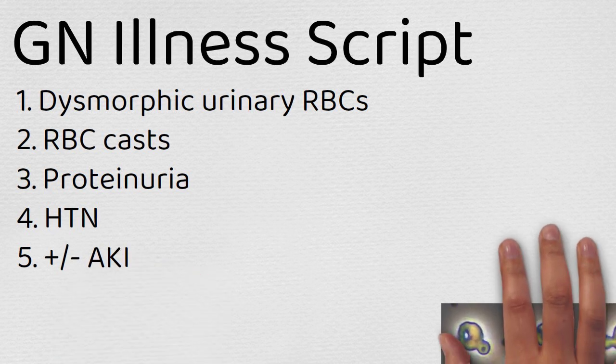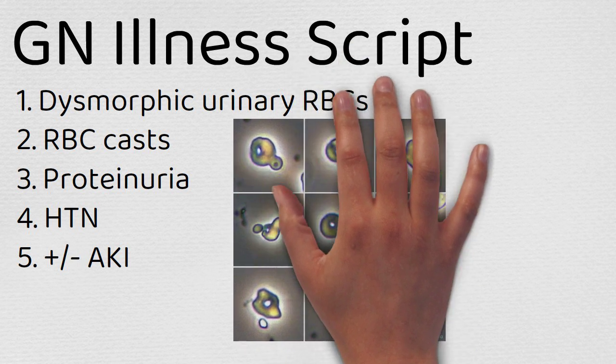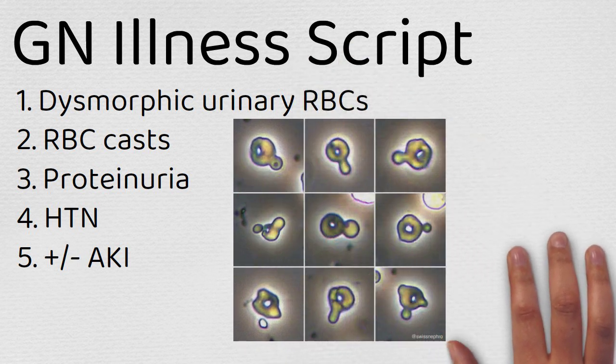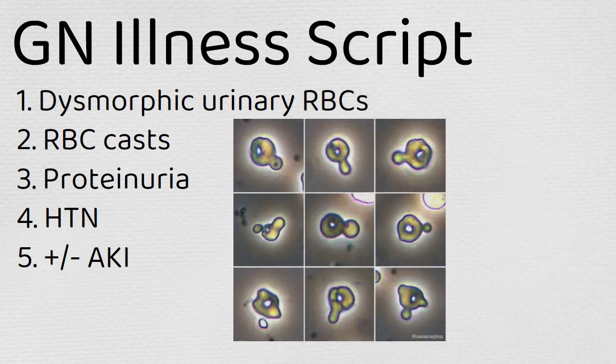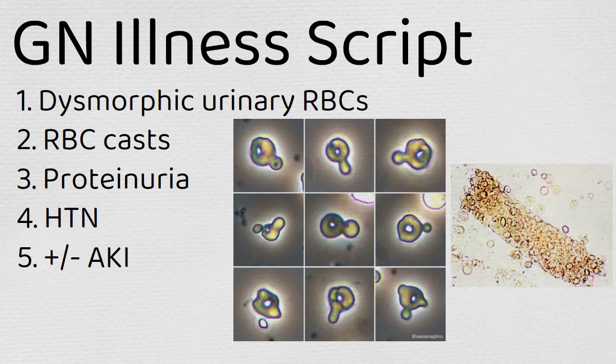Now those dysmorphic RBCs — here's what they look like. These are not the same dysmorphic RBCs you see in schistocytes. This is a blebbing of the membrane. This bleb happens because as these cells pass freely through the podocytes — they weren't squeezed, they pass freely — when they dip into the loop of Henle, they bleb out because of the osmotic shifts. There's a picture of what a cast looks like.